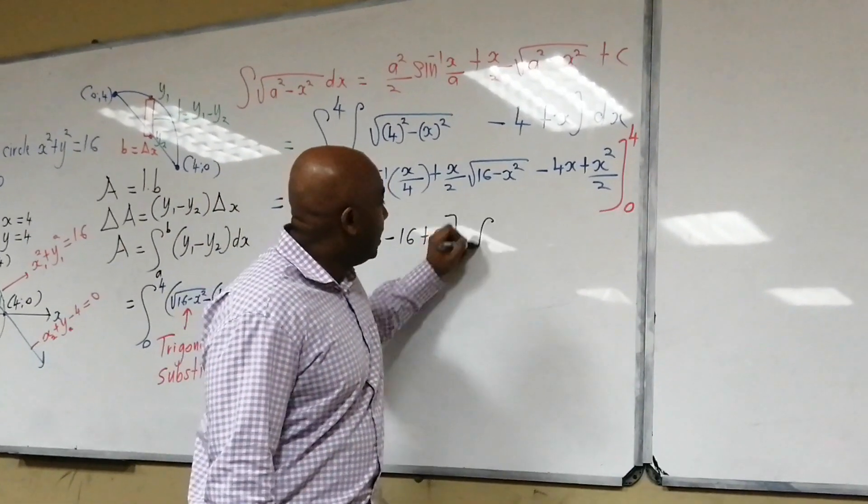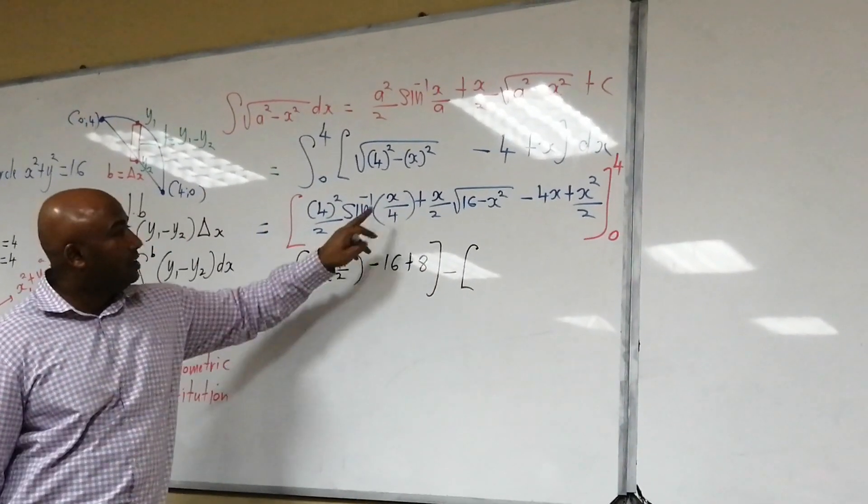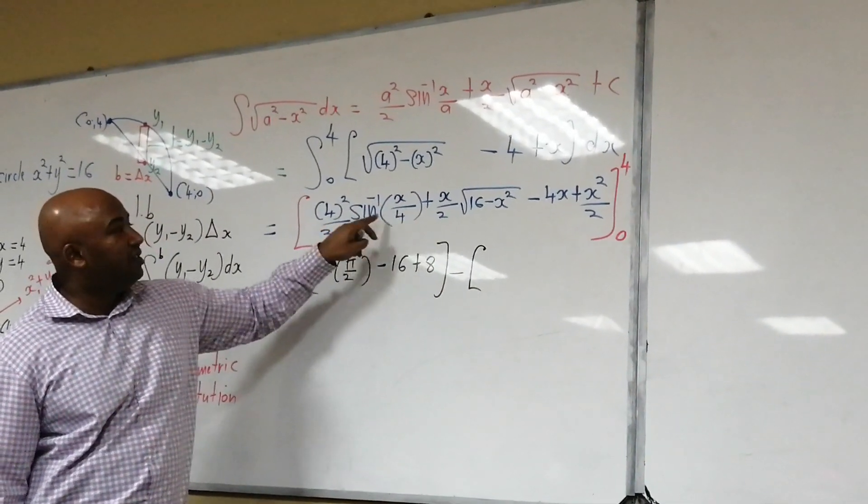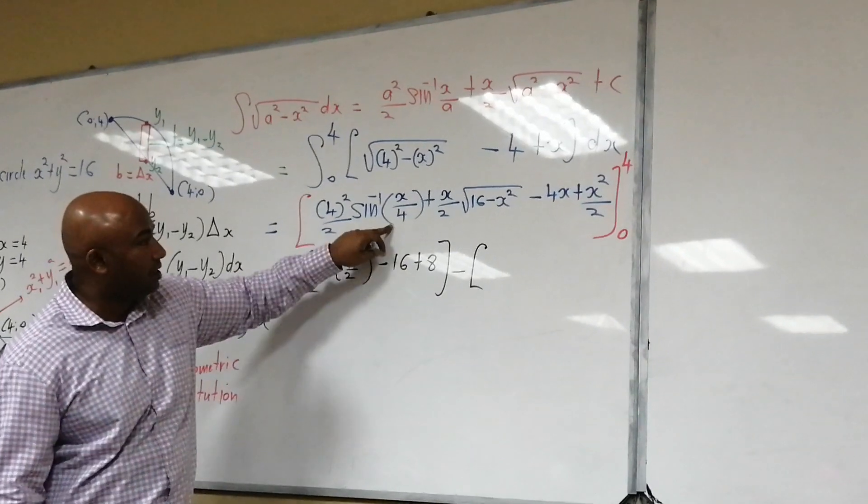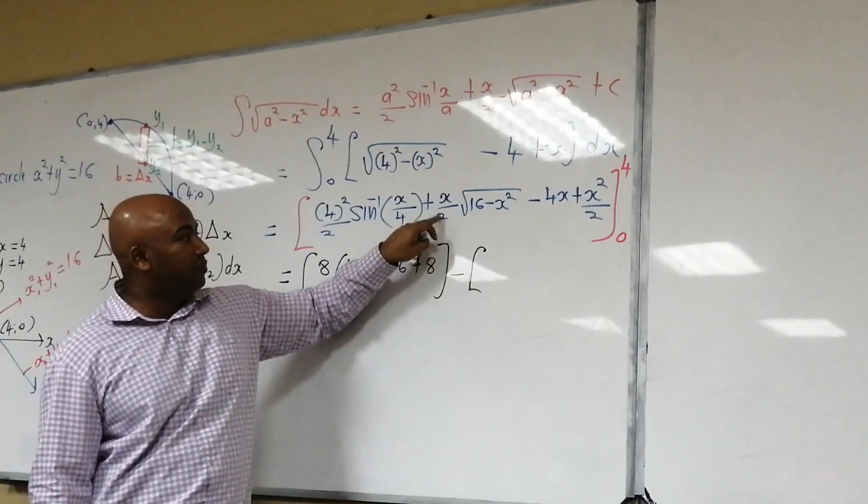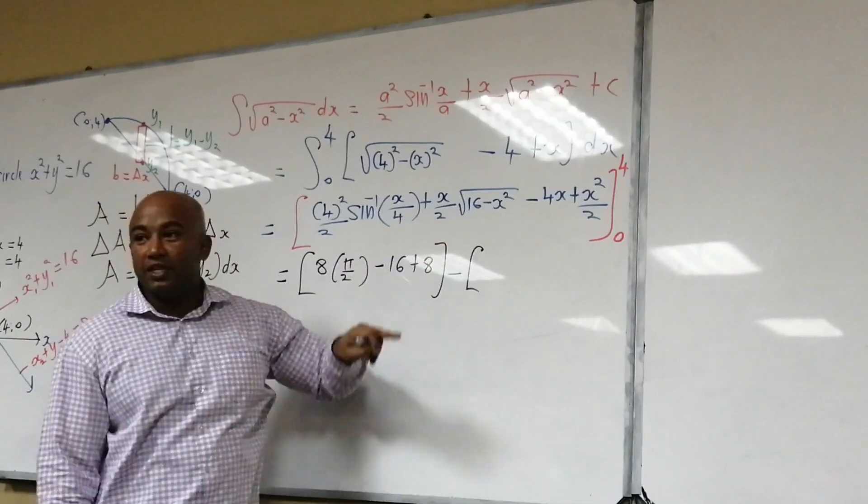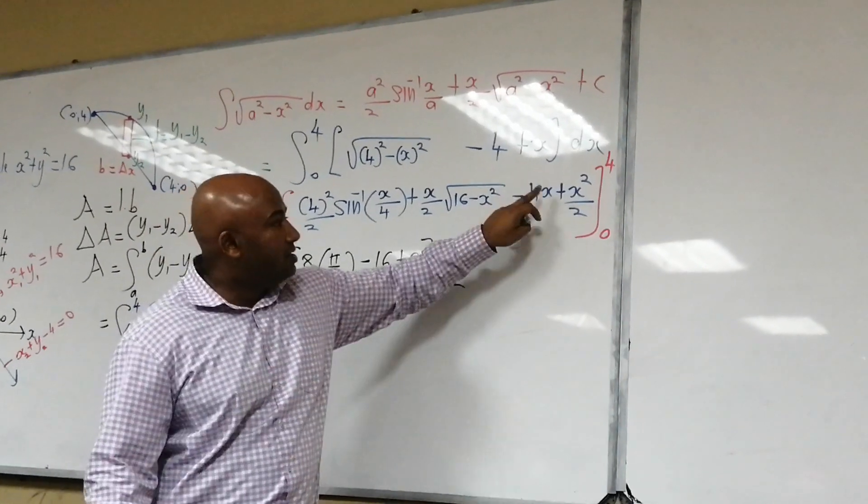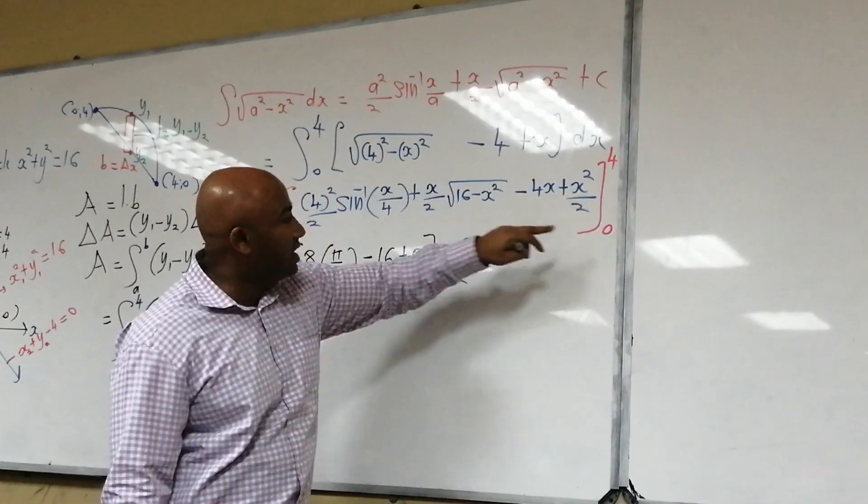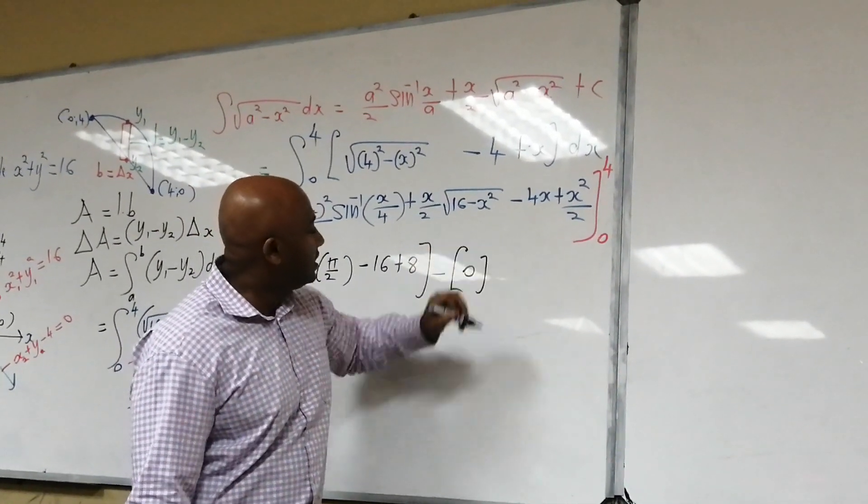So minus, now if I substitute a 0, 0 over 4 is 0, inverse sine of 0 is 0, so this is 0. 0 over 2 is 0, 0 times anything is 0 there, 0 here, 0 there. So when I substitute 0, I'm just getting 0.